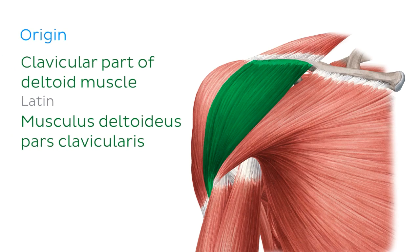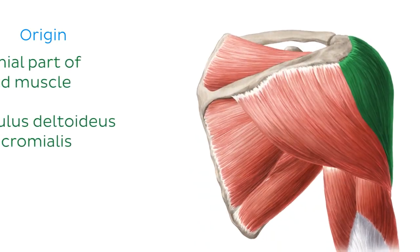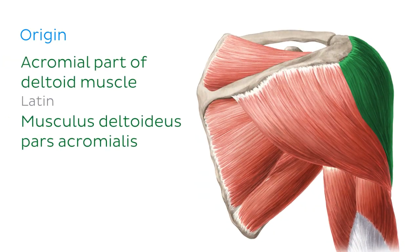Anteriorly, we have the clavicular part, which originates from the lateral third of the clavicle. And if we change views so that we can see the deltoid from a posterior perspective, we can see the acromial part, which originates from the acromion of the scapula.